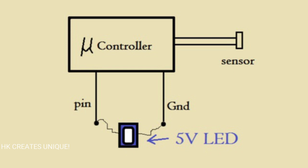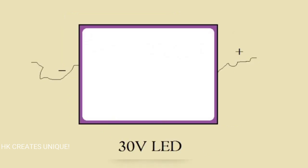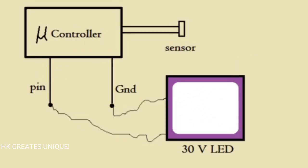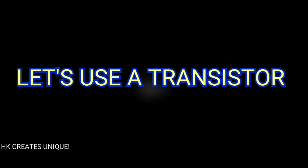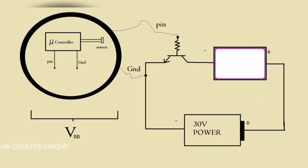But suppose you want to control a really big load, suppose an LED of 30 volts. For this, if you connect a 30 volt LED directly at the output pin, it will be useless. Then how to drive this big load? For this, let's use a transistor.